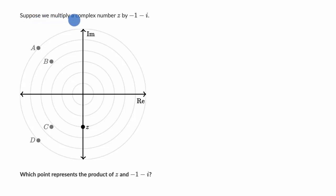We are told, suppose we multiply a complex number z by -1 - i. So this is z right over here. Which point represents the product of z and -1 - i? Pause this video and see if you can figure that out.